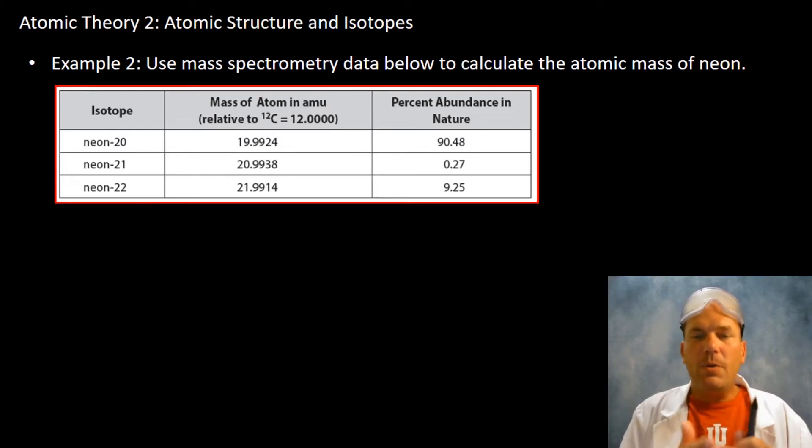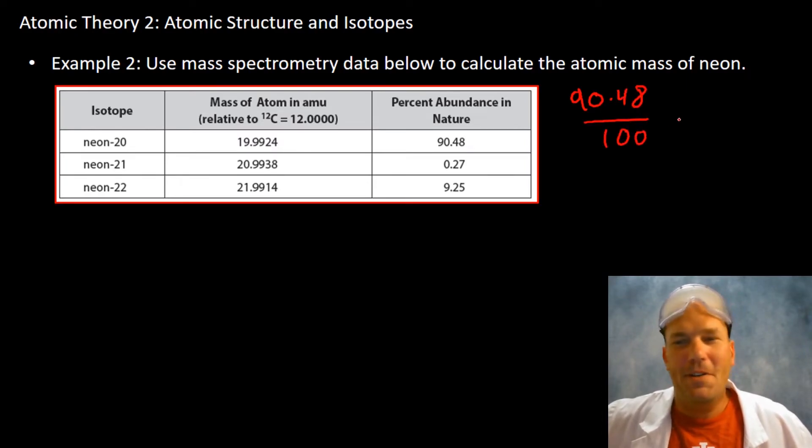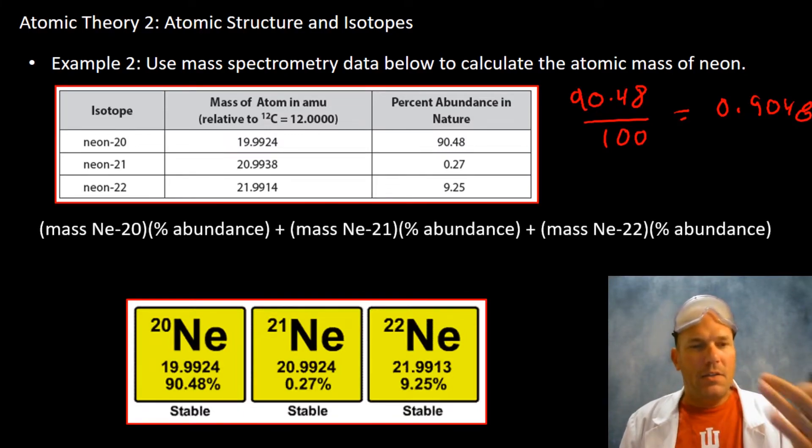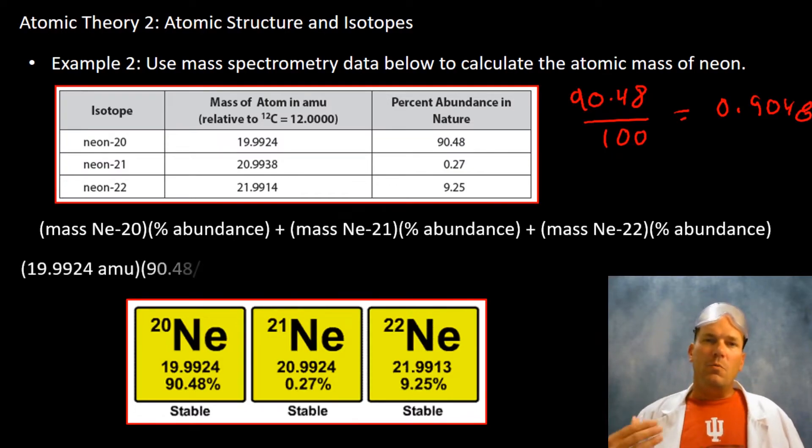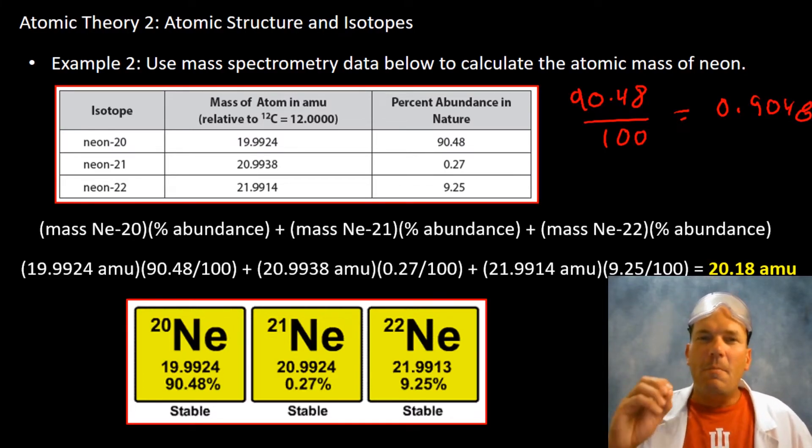You're going to take all three of these, look at the mass, and multiply it by the percentage. 90.48 divided by 100 equals 0.9048. I'm laying it out for you like I always do. Here's the formula you're going to use for these three isotopes multiplied by their percent abundance. Let's plug in some numbers. Once you get the numbers in and you've completed the multiplication, you add them all up and lo and behold, 20.18 atomic mass units. We must have done something correct.